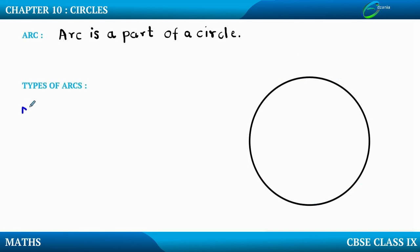Arcs are basically classified into three types: the first type is minor arc, the second type is major arc, and the third type is semi-circular arc.